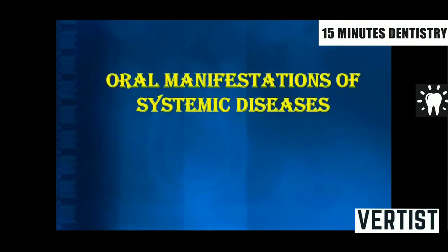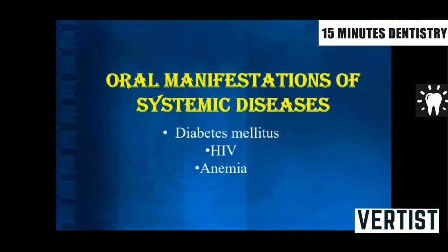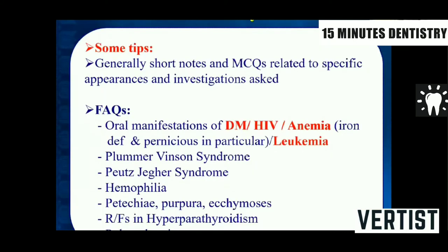Coming to the last part: oral manifestation of systemic diseases. I will be covering diabetes mellitus, HIV, and anemia. Short notes and MCQs are generally asked on specific appearances and investigations. You must know the oral manifestations of diabetes mellitus, HIV, and anemia — particularly iron deficiency and pernicious anemia. Leukemia oral manifestations have been asked once. Also know Plummer-Vinson syndrome, Peutz-Jeghers syndrome, hemophilias, and thalassemias.